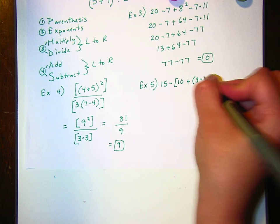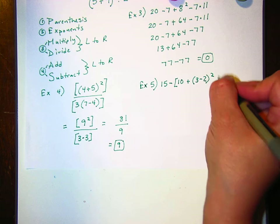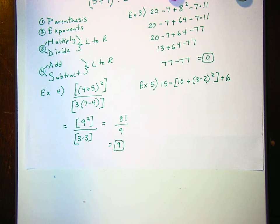So here's the problem right here. I'm going to write it out. Okay. So that's the problem. It's 15 minus, in brackets, 10 plus, in parentheses, 3 minus 2, parentheses, squared, bracket, plus 6.